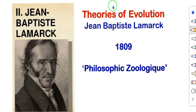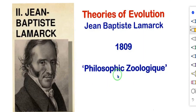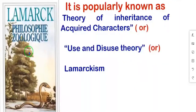First we are going to see Lamarckism. The Lamarckism theory was proposed by Jean Baptist Lamarck, a French naturalist well known for his theory of evolution. Lamarck's theory of evolution was published in 'Philosophic Zoologique' in the year 1809. This theory is popularly known by three names: the theory of inheritance of acquired characters, the use and disuse theory, or simply Lamarckism.